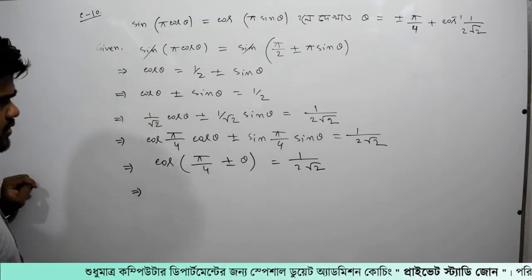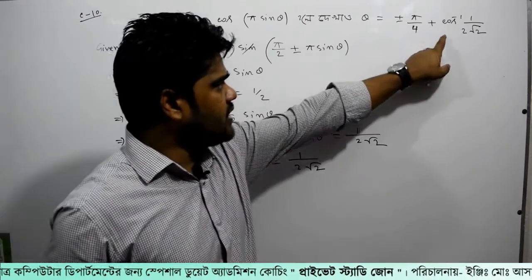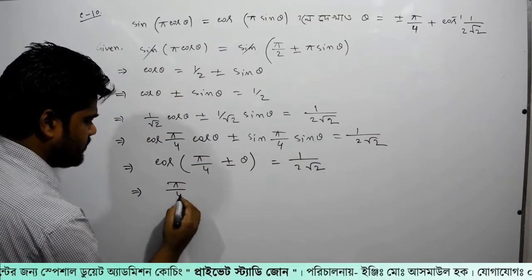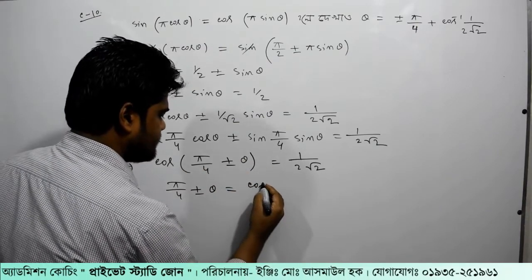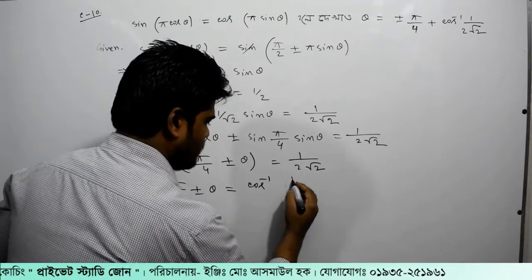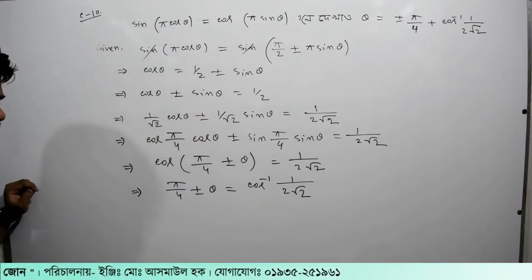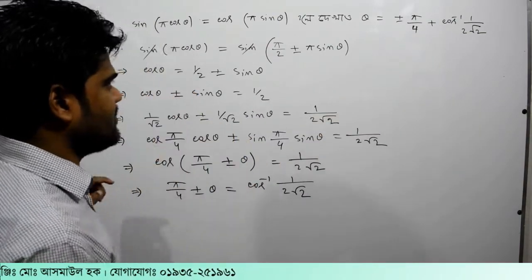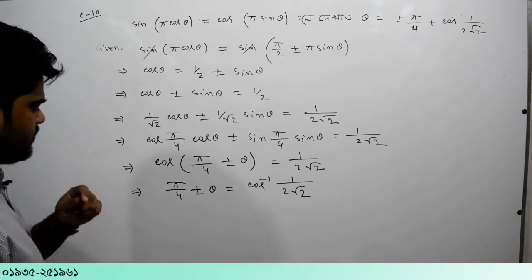So let's see what happens here. Taking cos inverse: π/4 plus minus theta equal to cos inverse of 1 by 2 root over 2. Let's see what happens here — π/4 raised is what happens here.